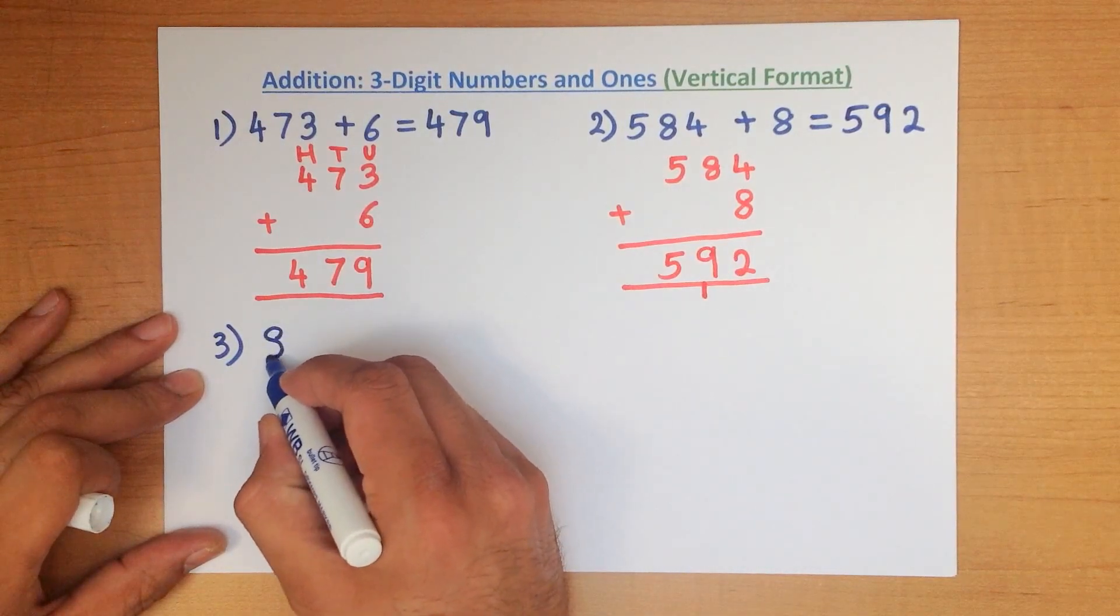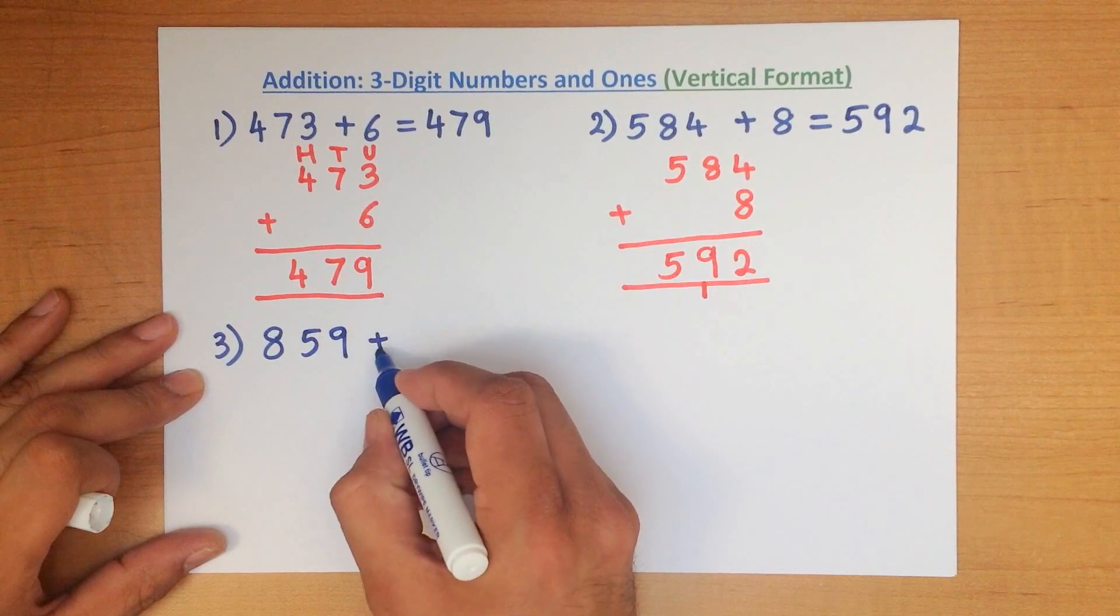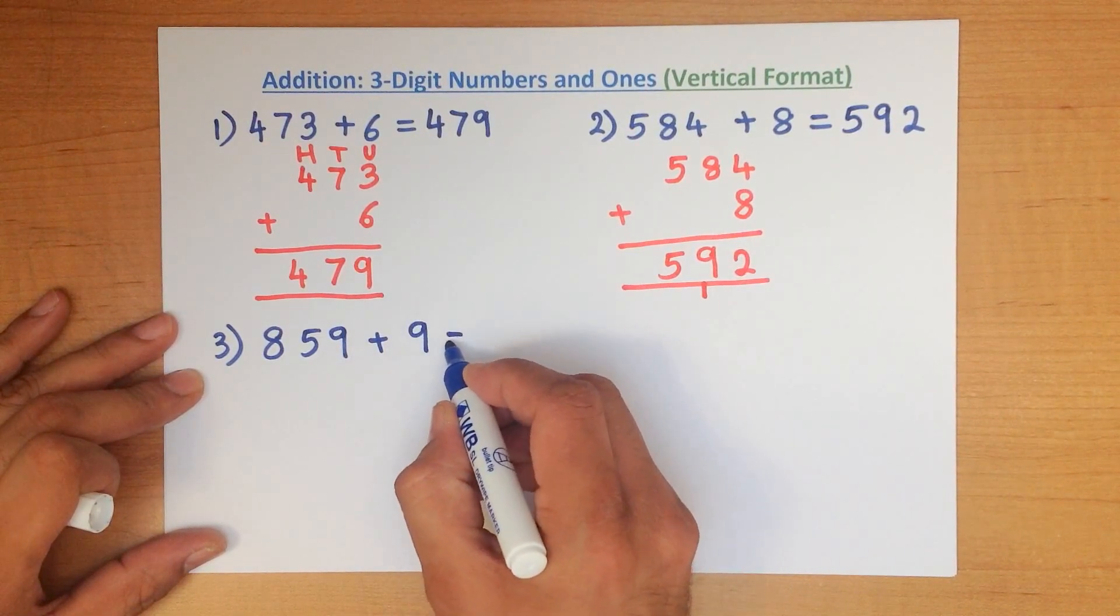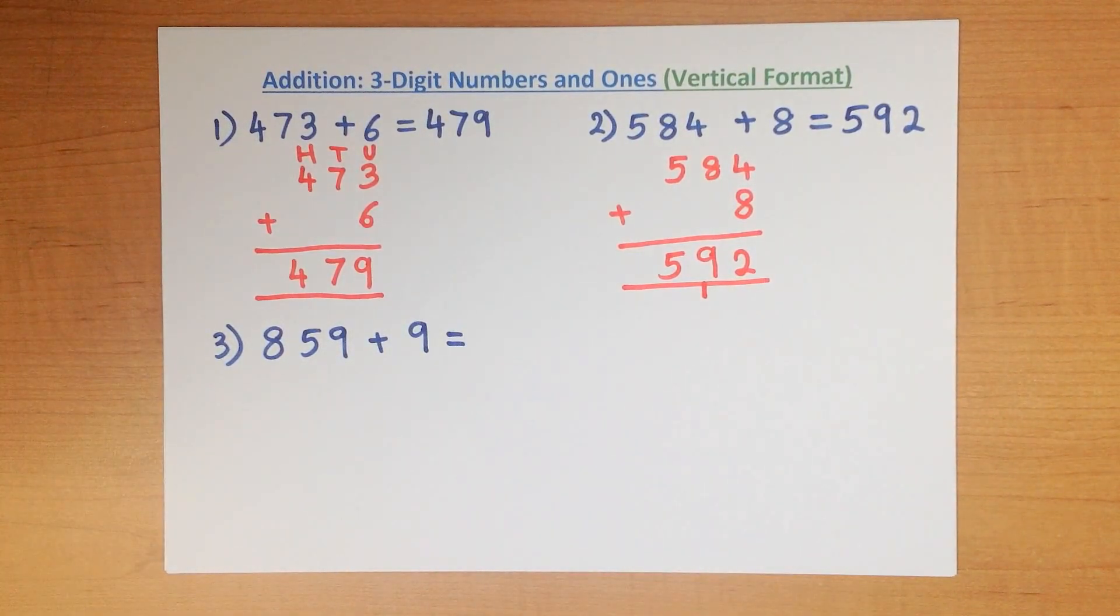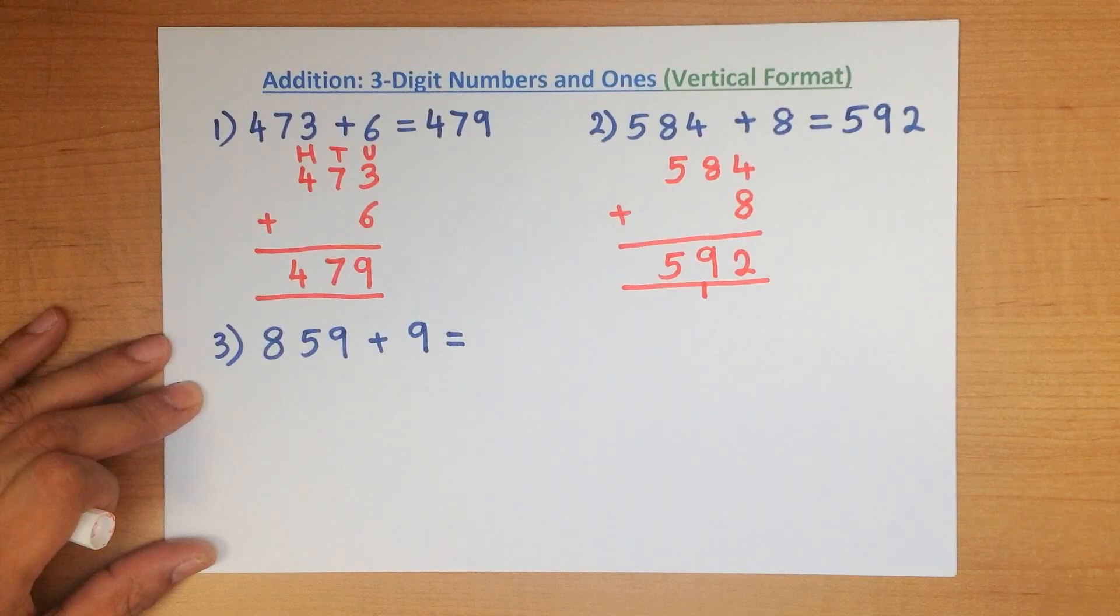What is 859 plus 9? Writing these down in the vertical format.